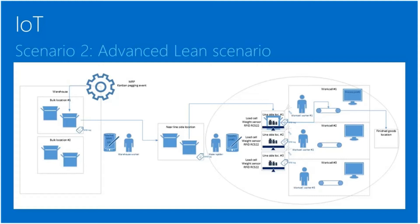In the advanced scenario, instead of infrared transmitter and receiver, I use a weight sensor to determine quantities — not just empty or full, but what quantity of product is being consumed. This is useful for recycled Kanbans and partial fulfillment. I also use RFID technology — specifically RFID RC522, which is an industrial standard — to handle mixed item locations and even determine who is working at that location using badge-like RFID tags. This scenario is completely built and available on my blog for you to replicate today.